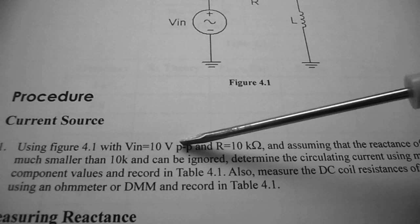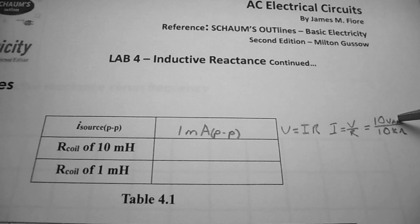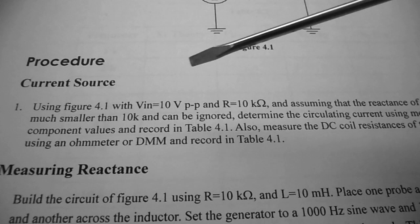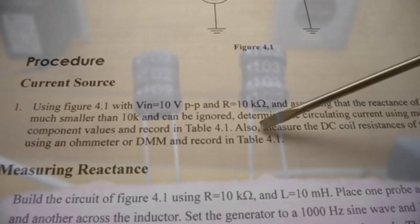We're just going to have 10 volts peak to peak going through a 10k ohm resistor. Using Ohm's law, V equals IR, I equals V over R — we take our 10 volt peak to peak and divide by our 10k ohm resistor, and we end up with 1 milliamp, noting that it is peak to peak. We're also going to measure our resistor and our two inductors and record those results.